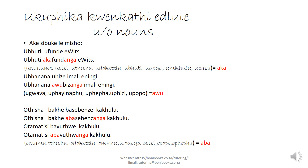Upanana ubize imal eningi. Because upanana is not a person, we cannot say aga. We say upanana awubizanga imal eningi. In the plural form: otisha basebenze aga kulu becomes otisha baake abasebenzanga aga kulu. Otamatesi bavutue aga kulu becomes otamatesi abaavutuanga aga kulu. Please note: plural takes aba, singular person takes aga.